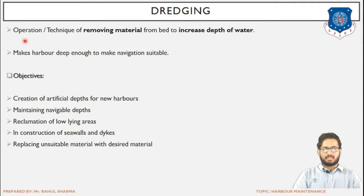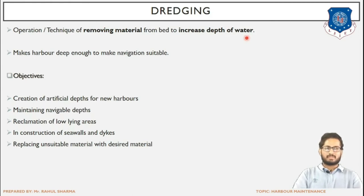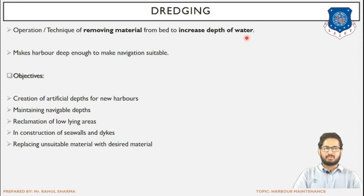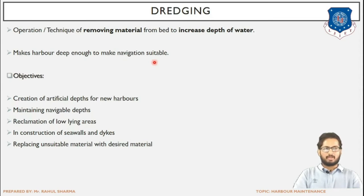The definition of dredging is the operation or technique of removing material from the seabed to increase the depth of water. Silting means the deposition of sediments. As the harbour is constructed in the water body, silting constantly takes place — sediments get deposited on the seabed, reducing the total navigable depth. To maintain navigable depth, we have to remove the excessive sediments that have been deposited. That process of removing those materials is termed as dredging.